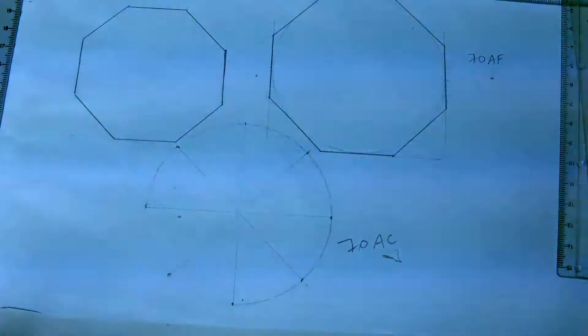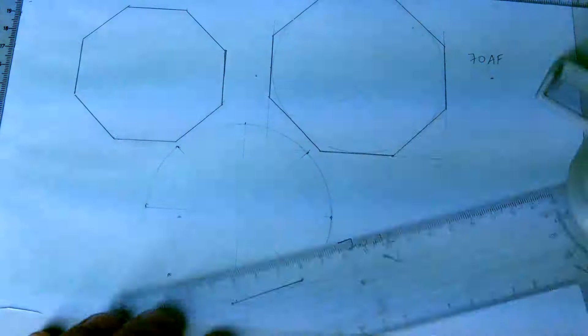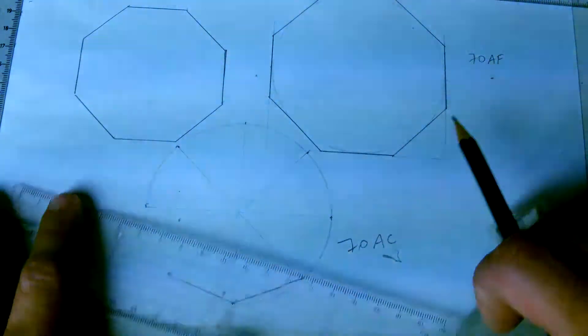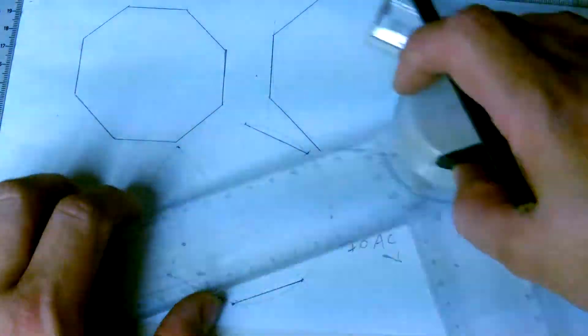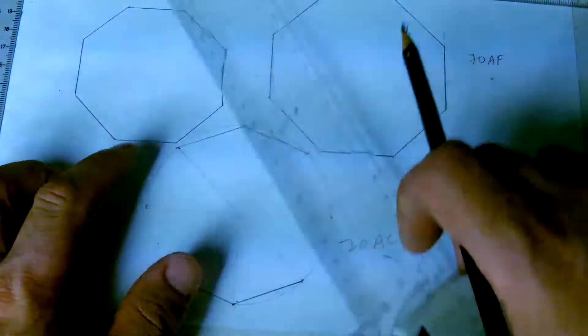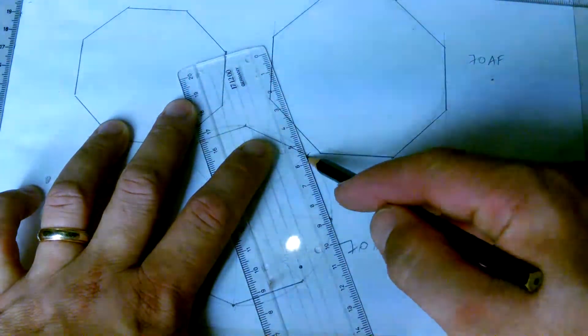All you need to do is take a ruler. You don't need angles now, and join the outside.